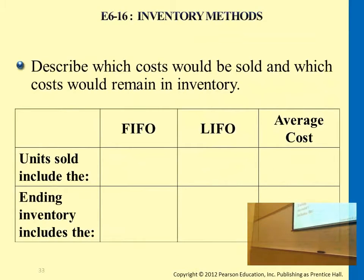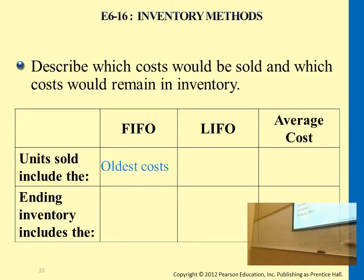Here's a table that just compares all three methods. Under FIFO, units sold includes the oldest costs. We always start from earlier transactions, then to later ones. And therefore, if the units sold is oldest, what's left will be the newest cost.